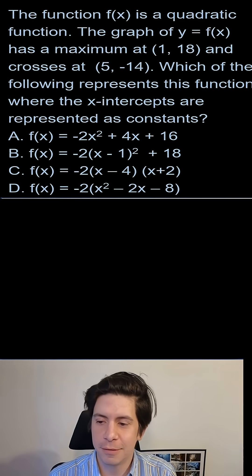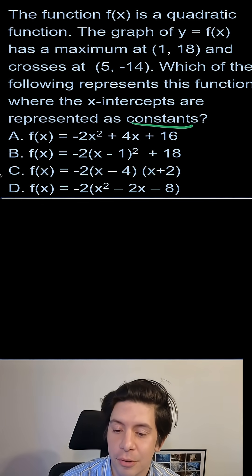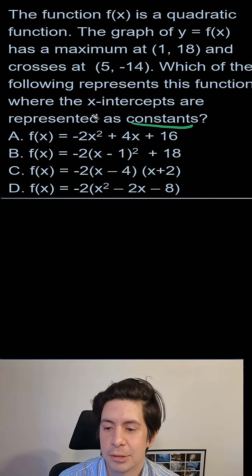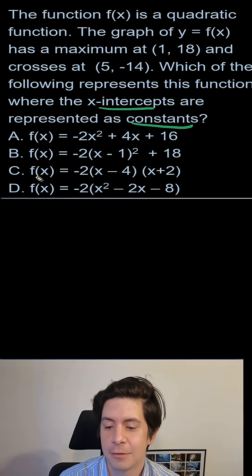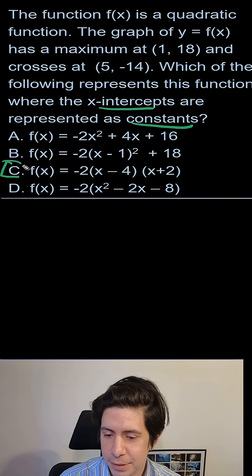The thing that throws people off on this one is they don't understand what that means by represented as constants. That means you can look at the equation and automatically see what the intercepts are. And the way to see that is factored form. Which of these is in factored form? It would be C. That is factored form. So it should be C.